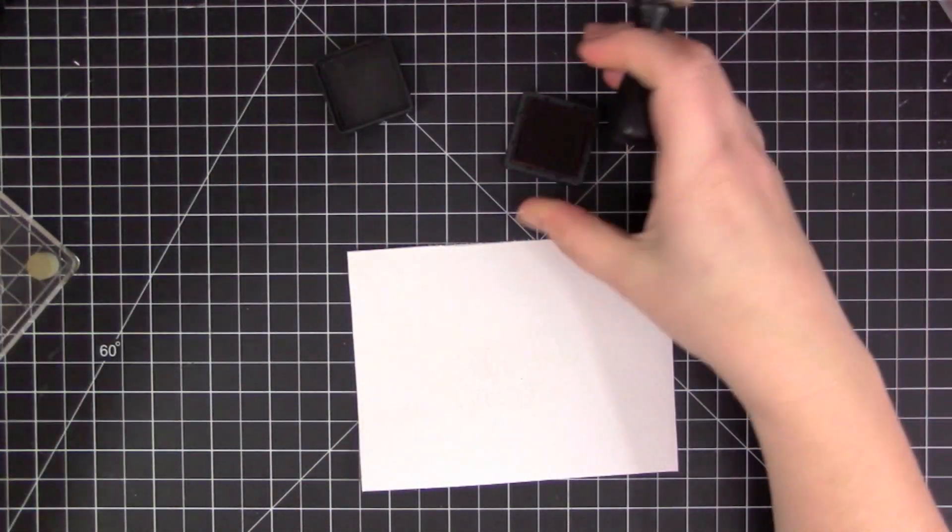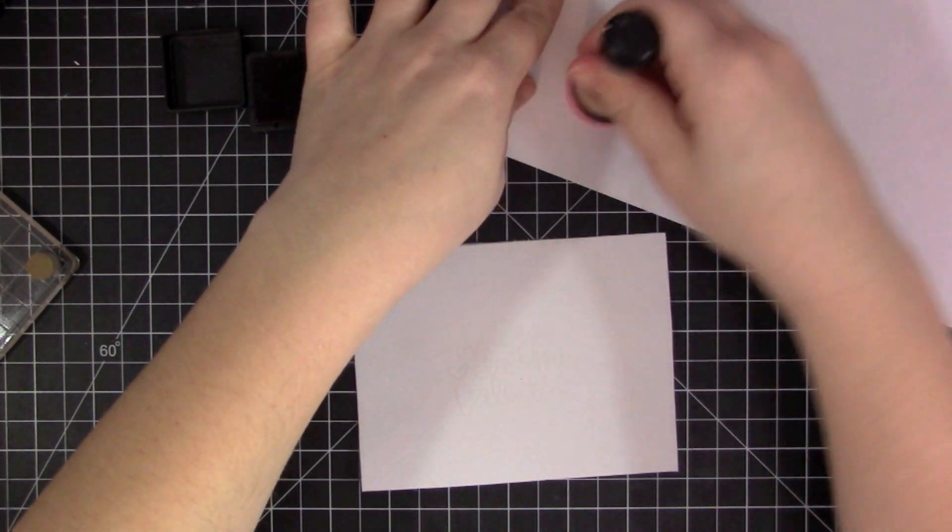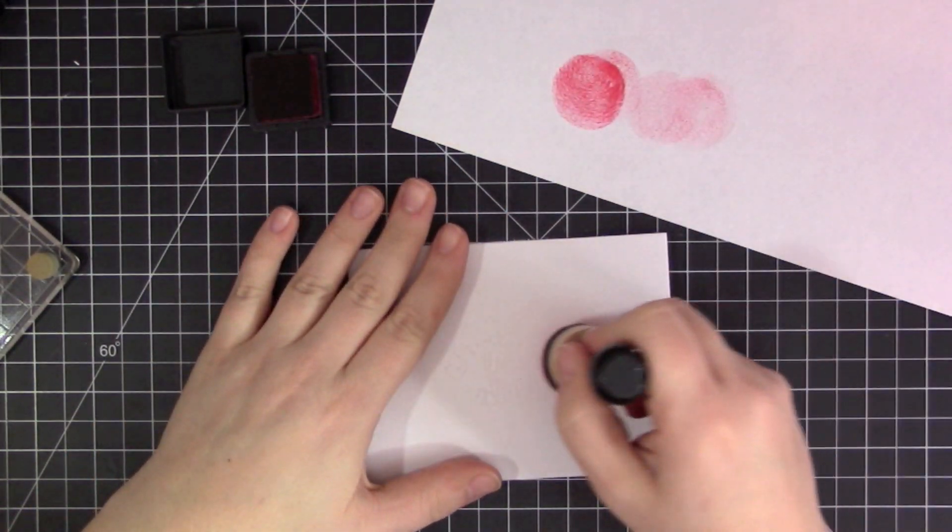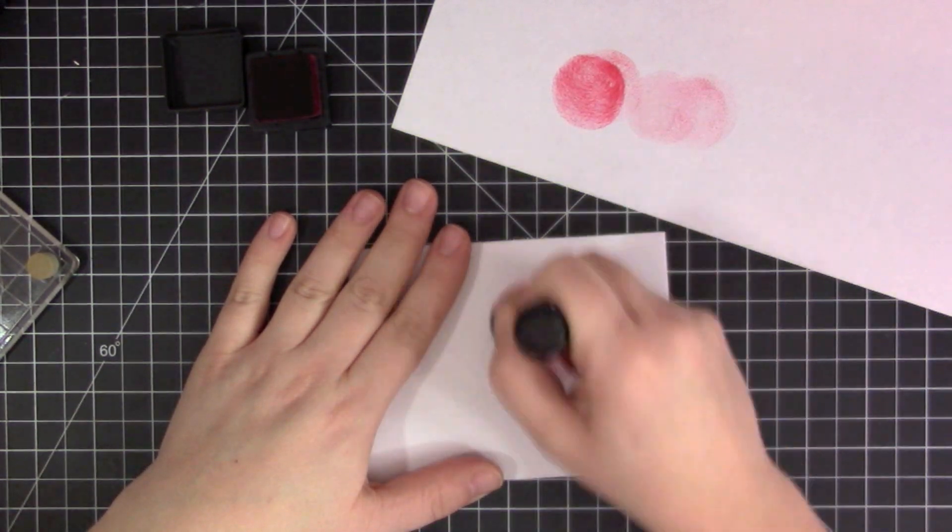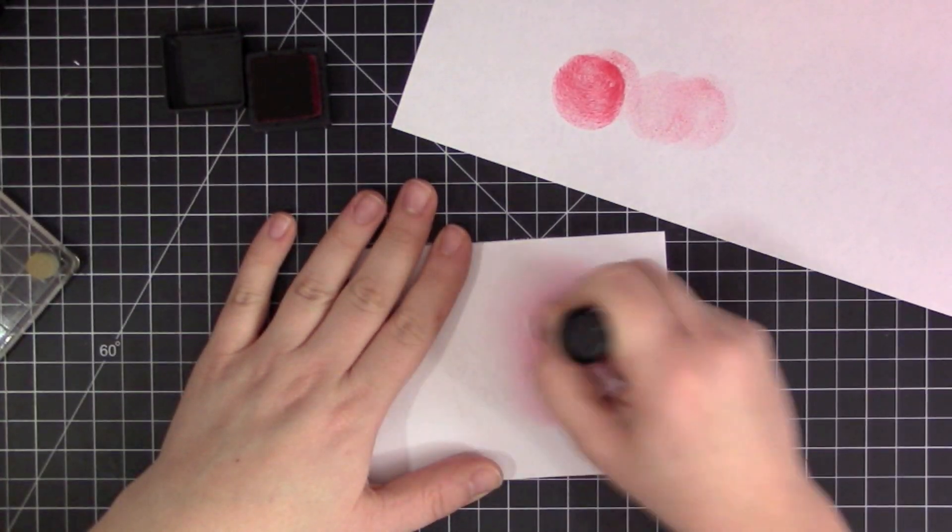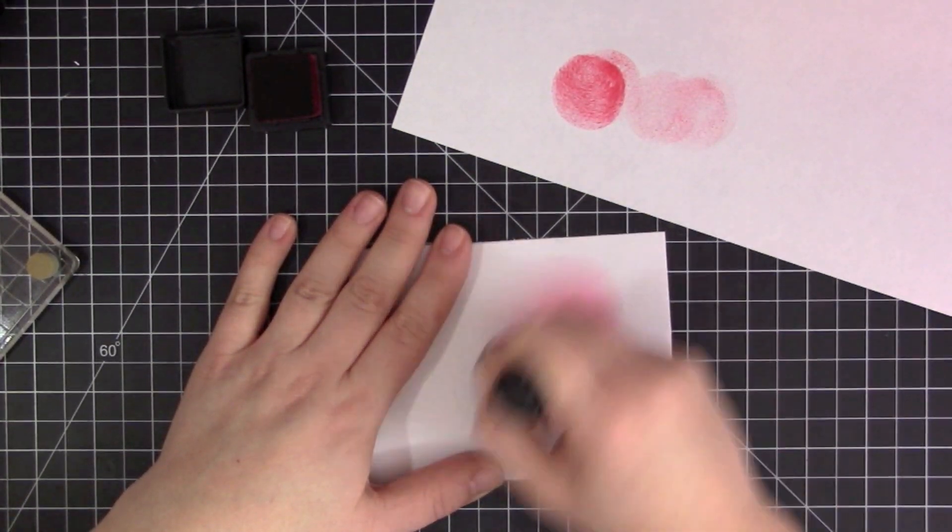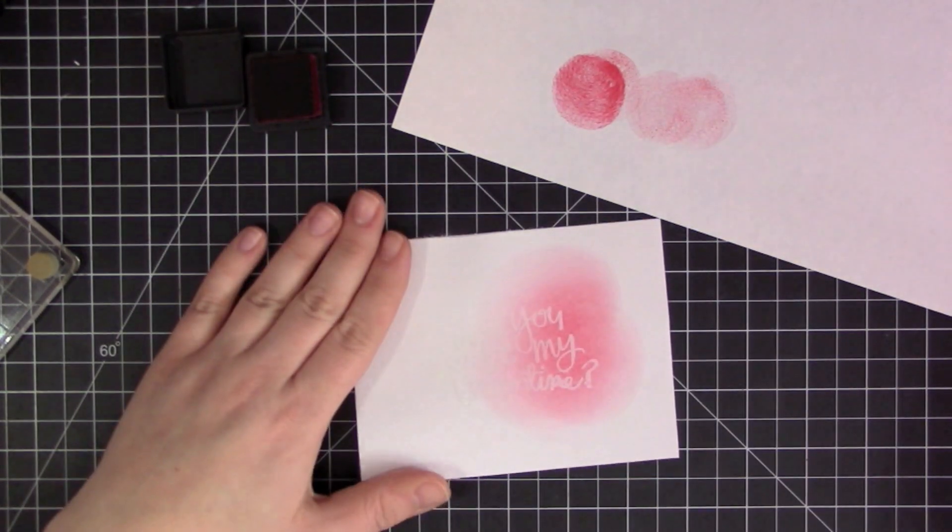I'm using Festive Berries ink from Tim Holtz Distress ink, and I'm just dabbing it onto a piece of scrap paper before I'm applying it to the canvas. The reason I'm doing this is because I'm starting to apply the ink directly in the center area of the canvas.